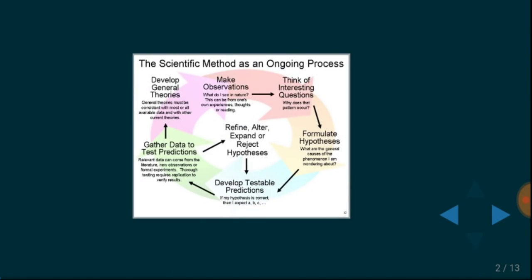In data science, the first two terms we face are 'data' and 'science.' By science, we simply mean the scientific method. In our case, the computer is wearing a white cloak and doing experiments on the data we provide — just like the standard scientific method. It's making observations, thinking of hypotheses, formulating and refining them, developing a model, running it, and testing it. Exactly like the scientific method. That's why it's called data science.